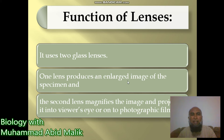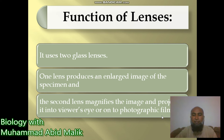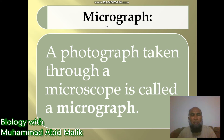One lens produces an enlarged image of the specimen, and the second lens magnifies the image and projects it into the viewer's eye. The second lens is also termed the eyepiece, and the first is termed the objective lens. A photograph taken through a microscope is called a micrograph.